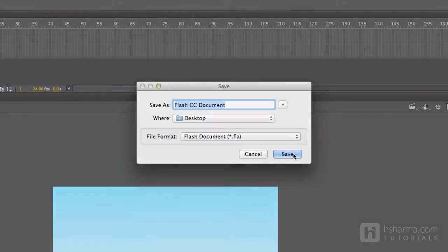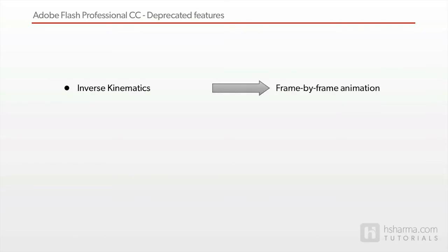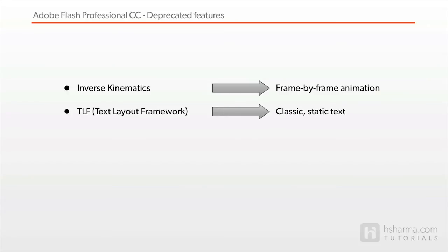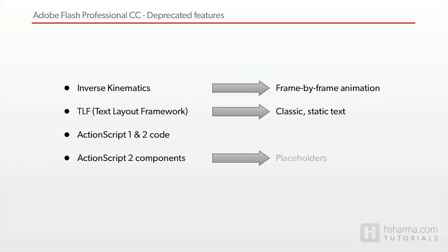Some of the features you will not see being supported in Flash Pro CC are inverse kinematics — these are converted to frame-by-frame animations. TLF or text layout framework objects are converted to classic static text. Any code written in ActionScript 1 and 2 will be removed from any instance on the stage. ActionScript 2 components will now be considered as placeholders and you won't be allowed to use them to create new content on stage. Also, they will generate compiler errors in ActionScript 3.